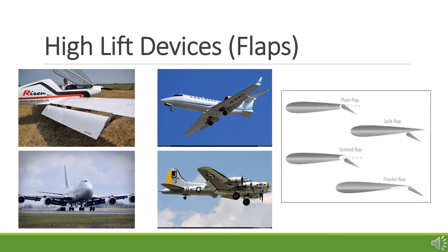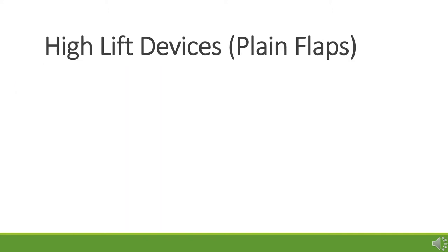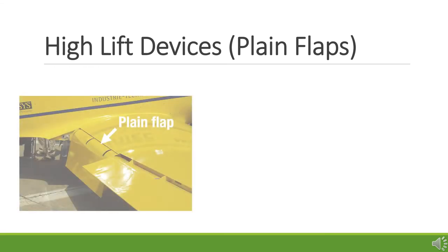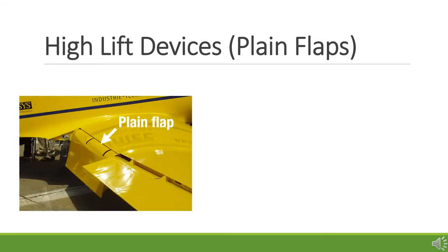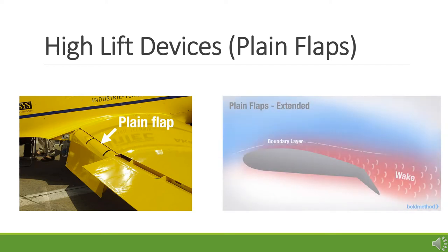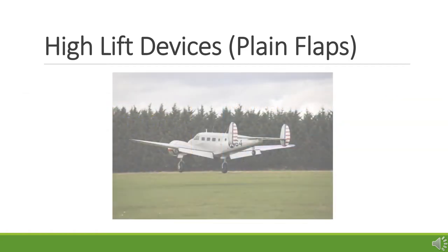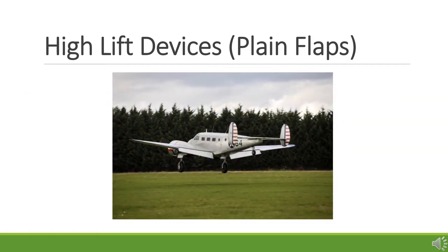The simplest flap is the plain flap. Connected to the trailing edge of the wing, the plain flap rotates downward on a simple hinge mounted at the front of the flap. Due to the greater efficiency of other flap types, the plain flap is normally used where simplicity is required. These simple hinge flaps came into common use in the 1930s, along with the arrival of the modern fast monoplane, which had higher landing and takeoff speeds than the old biplanes.